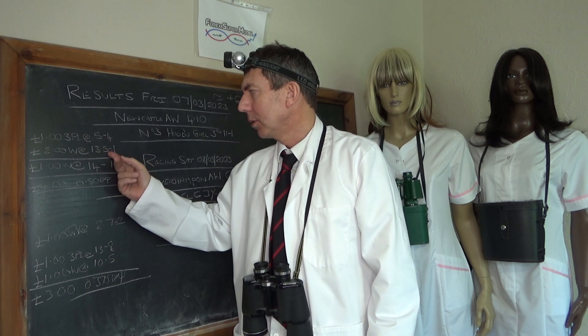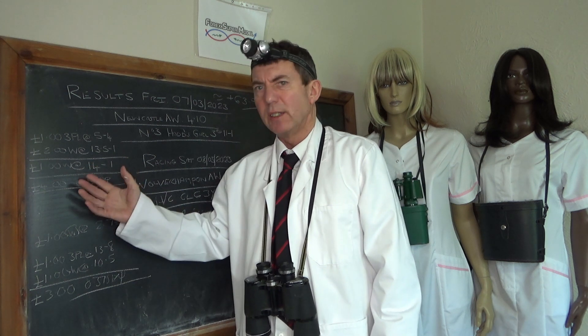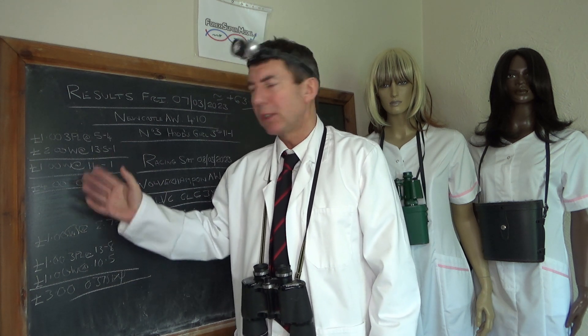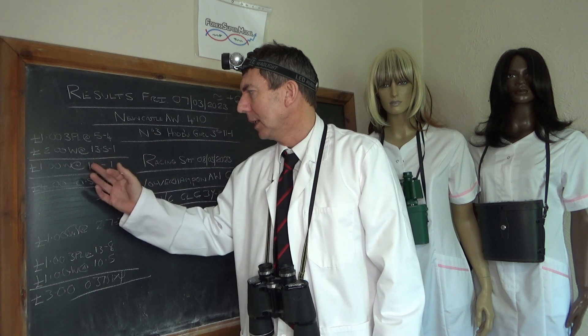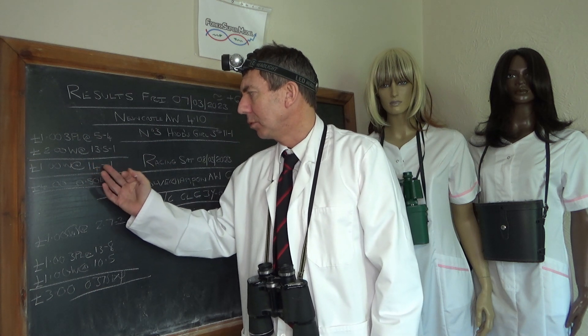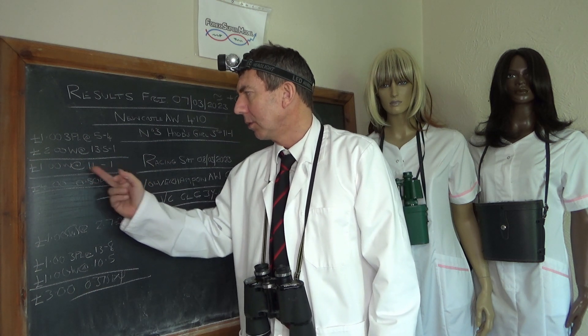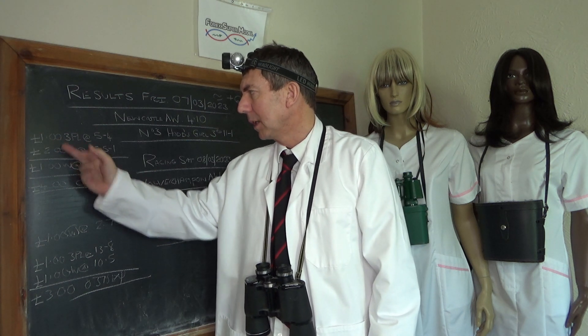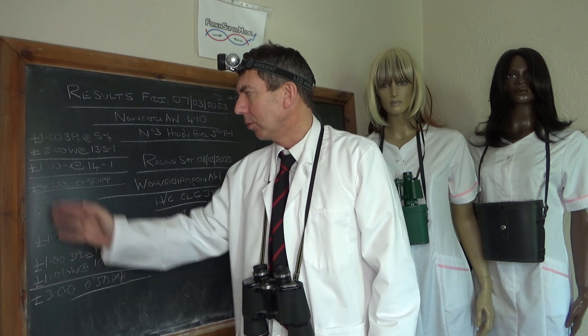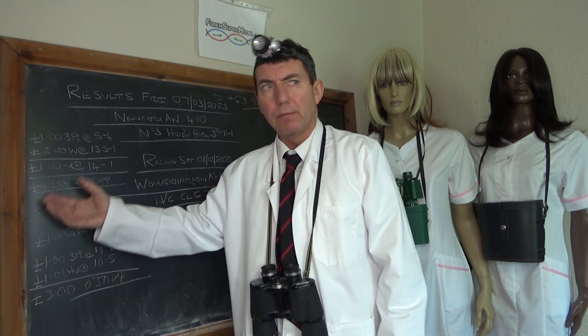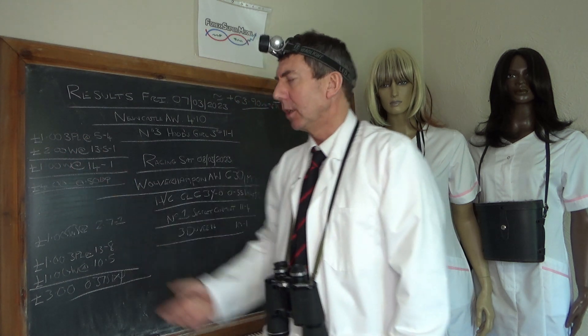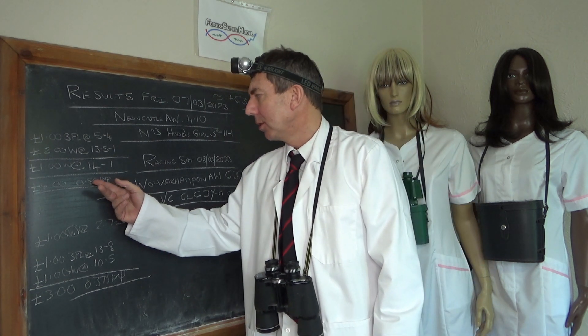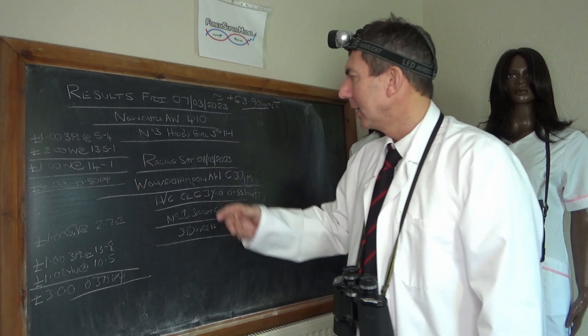A two pound win at thirteen and a half to one, then we topped it up as it basically stayed. We expected that to shorten up and it didn't really, so we topped it up at fourteen to one. We ended up with a three hundred pound win and a hundred pound place, so we had four hundred pounds on or four pound if you're mirroring this on the lower stakes, so we had half a unit exposure.